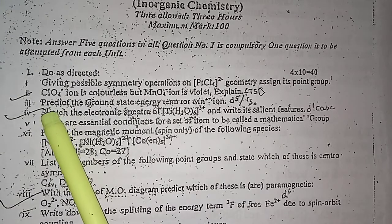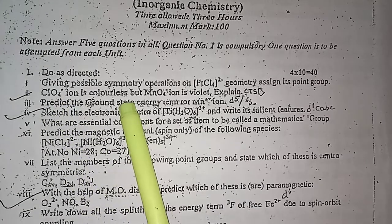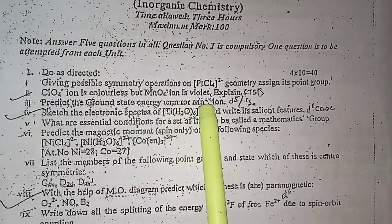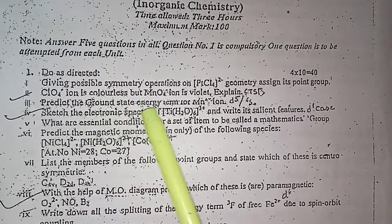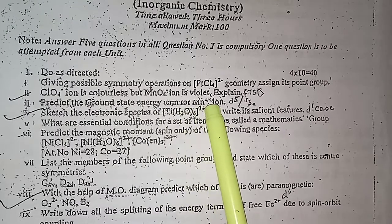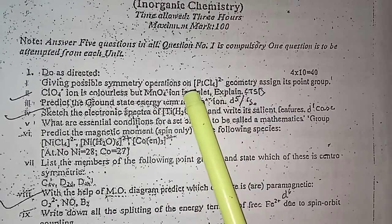The second question asked is: ClO4- ion is colorless but MnO4- ion is violet. Explain. Here you have to give the reason why ClO4- ion is colorless but MnO4- ion is violet in color.